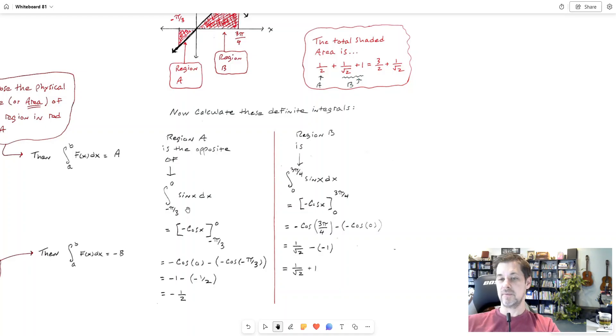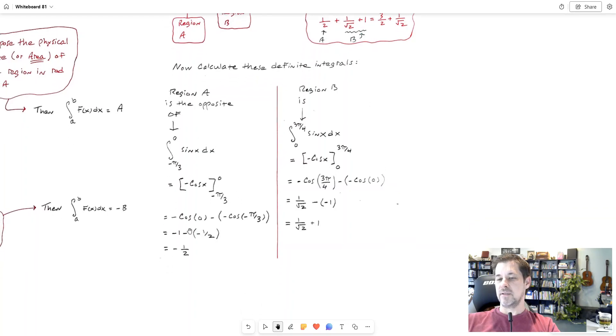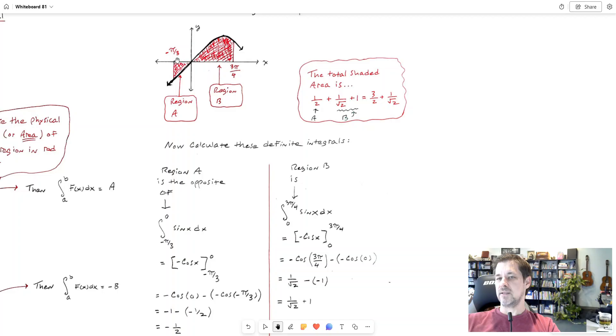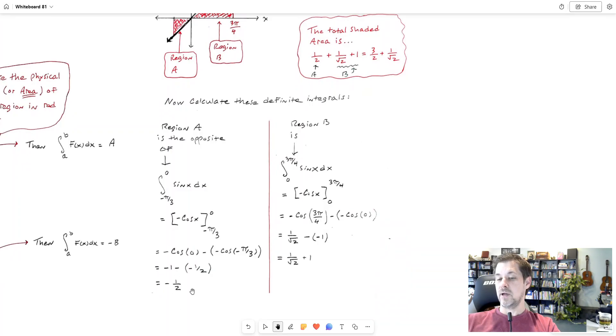Let's say sine x: what's the antiderivative of that? What do you take the derivative of to get sine x? That would be negative cosine x. And I evaluate between the bounds 0 and negative pi over 3. I put 0 into the antiderivative first, you get negative cosine 0. Then I subtract: I put negative pi over 3 into the antiderivative, I get negative cosine negative pi over 3. I calculate those and my final result is negative one-half. So what that means is the physical size of this region A, its area, how big it is, is one-half of a square unit.